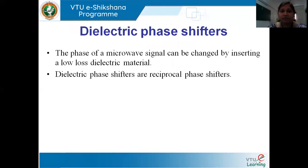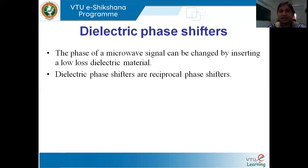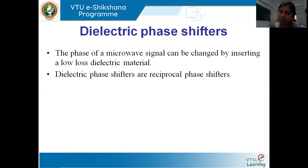For a dielectric phase shifter, what we are inserting here is one low-loss dielectric material. This material is associated with relative permittivity and relative permeability. Usually, the phase shifters are reciprocal — that is, you give the input at port one and take the output at port two; however much phase shift we get, if we give the same input at port two and collect the output at port one, the phase shift is almost going to be the same. So they are reciprocal phase shifters.